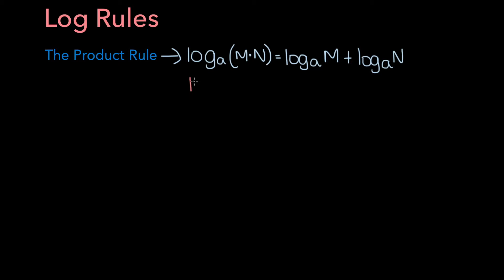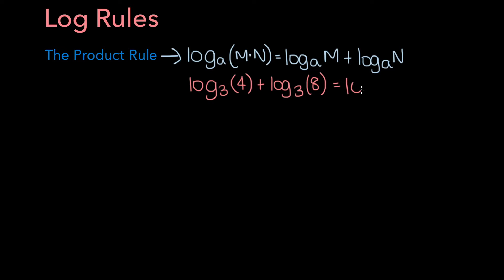For example, let's say you have the log base 3 of 4 plus the log base 3 of 8. This is equal to the log base 3 of 8 times 4, which is 32.